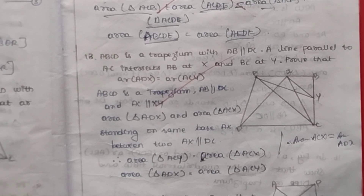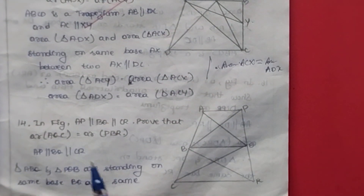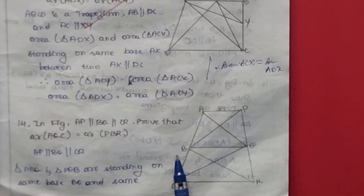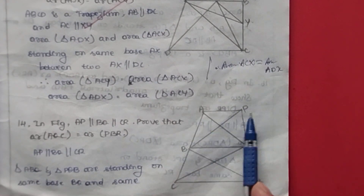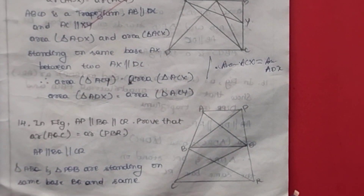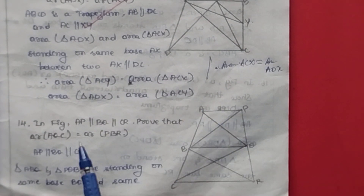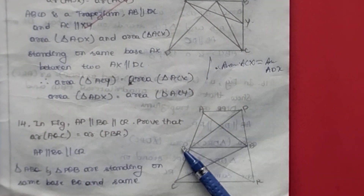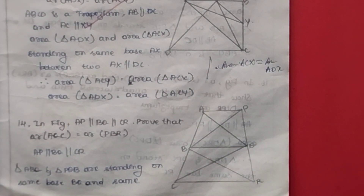Next I will explain question number 14. In the given figure, AP is parallel to BQ, and BQ is parallel to CR. These are three parallel lines. We need to prove that area of triangle AQC is equal to area of triangle PBR.